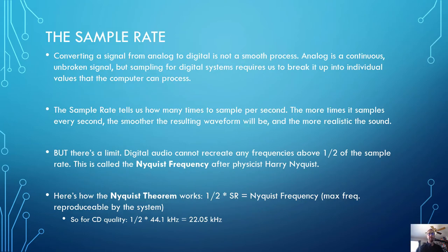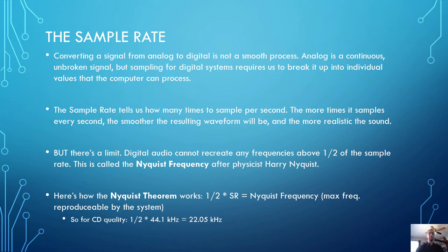When you're converting a signal from analog to digital, it is not a smooth process. Analog is a continuous unbroken signal — there is always an infinitely small change from one value to the next, always a constant series of fluctuations and changes. There's never a discrete value. However, when sampling for digital systems using an analog to digital converter, we're breaking up the signal into individual discrete slices that the computer can process.